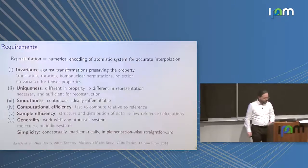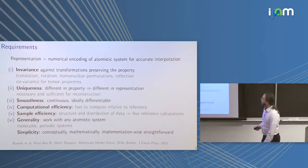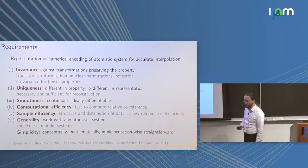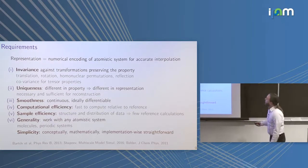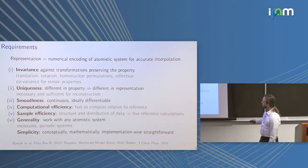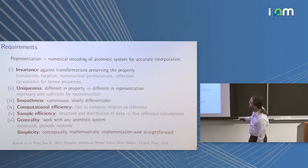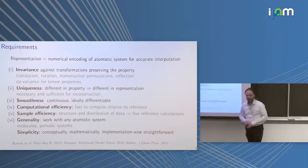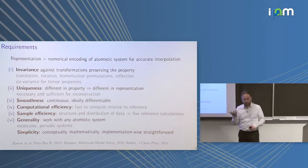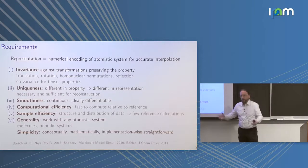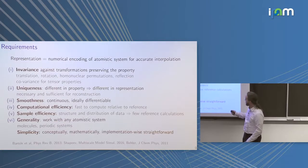There are requirements from physics we want to fulfill. For scalar properties, we want to be invariant against transformations that do not change the property — for example, translations and rotations. The energy doesn't change if the molecule is here, there, or rotated. This depends on the property you're modeling, and also on whether reflection invariance is necessary.